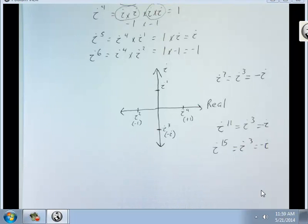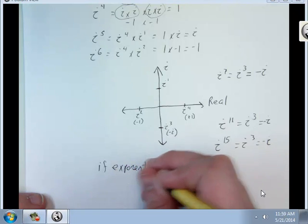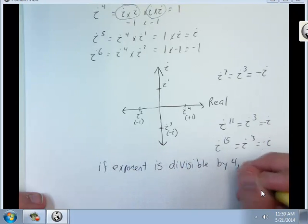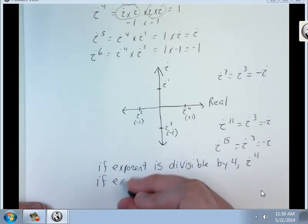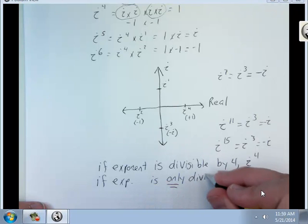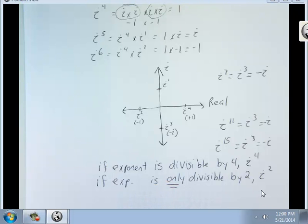So this is the rule. If exponent is divisible by 4, it's i to the 4th. If exponent is only divisible by 2, it's i to the second. So 6, 10, 14, all those even numbers that aren't divisible by 4 are i to the second.